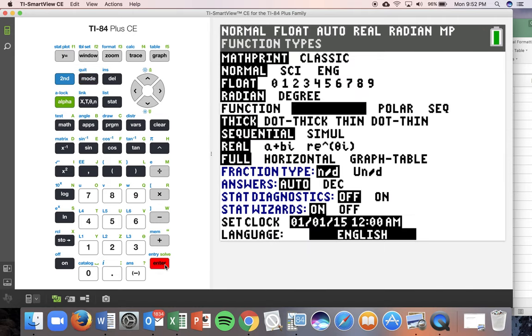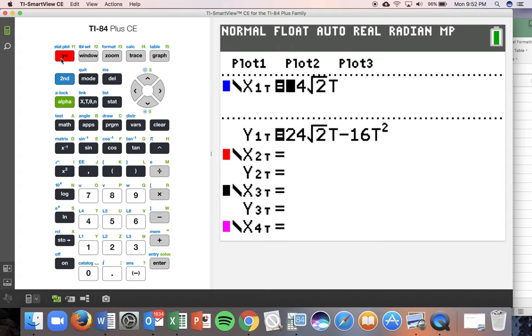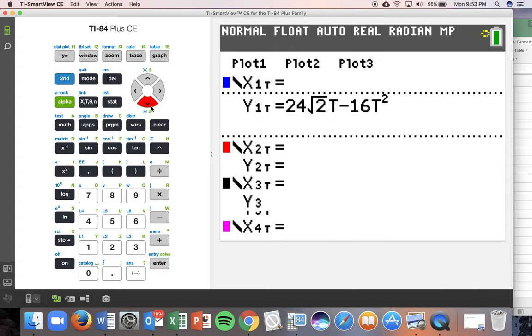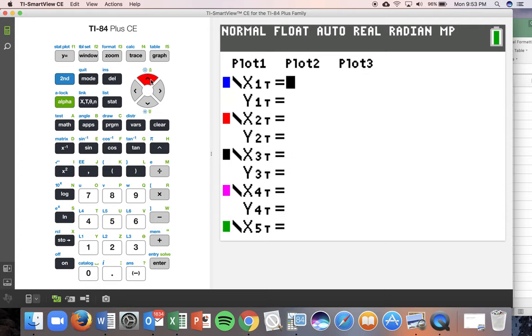Let's go ahead and change back to parametric mode. And let's clear these equations out. And let's take a look at that second example. The second example was 3 cosine theta. And I'm just going to use t for the variable again. And we've got y equals 4 sine theta.